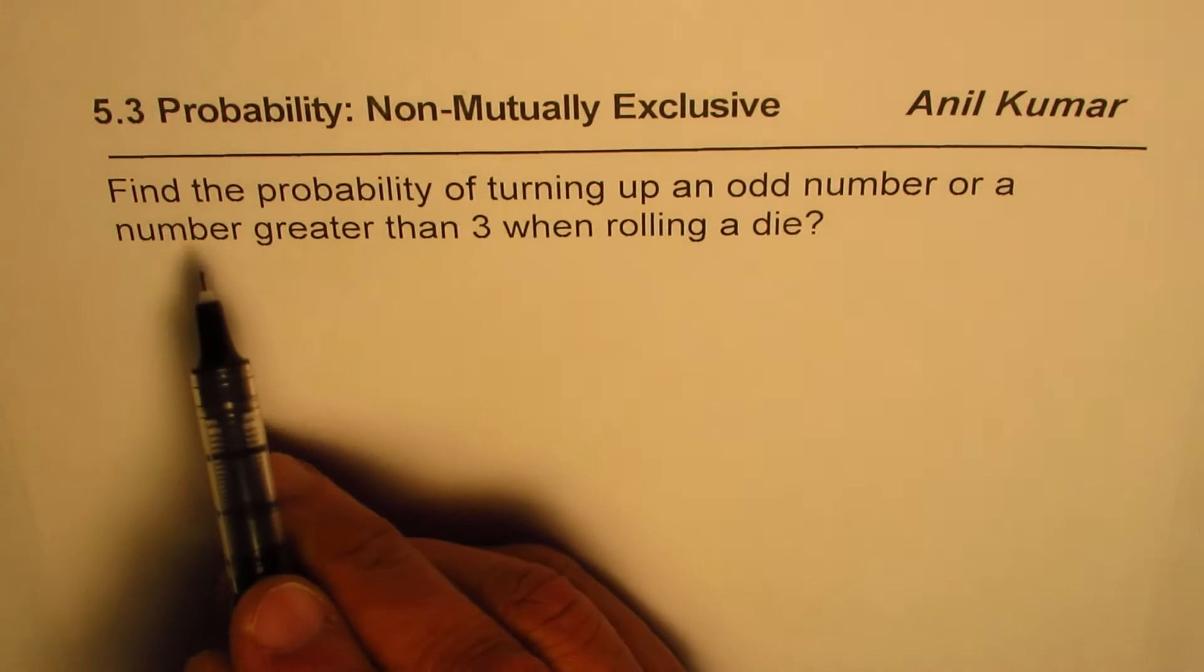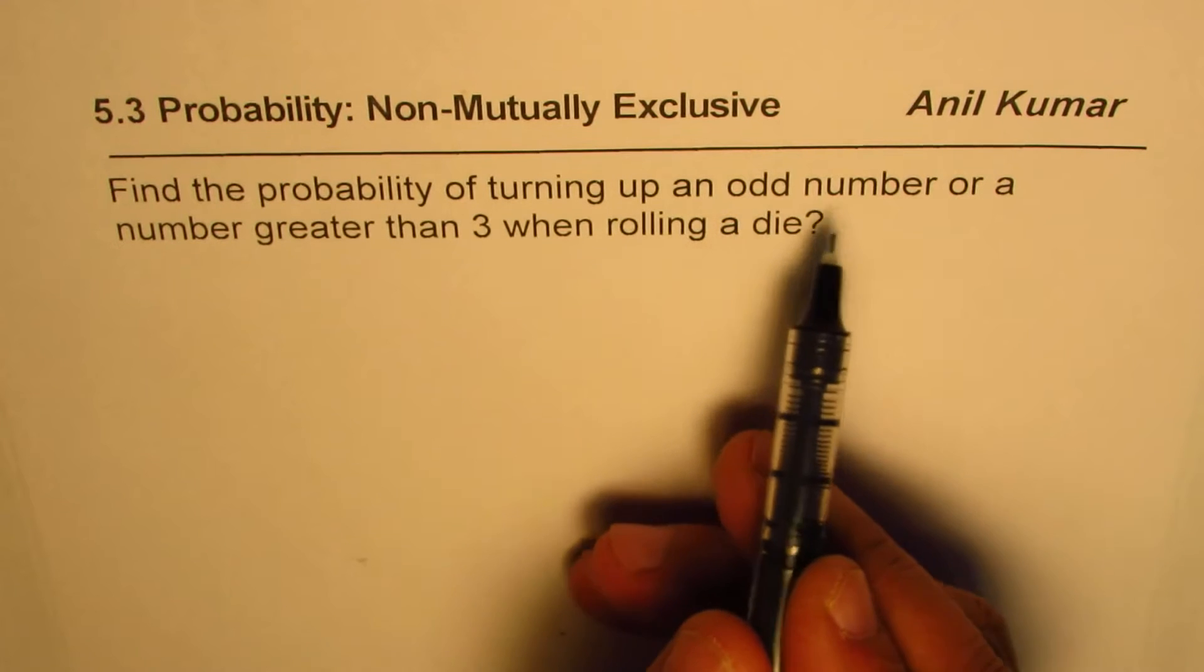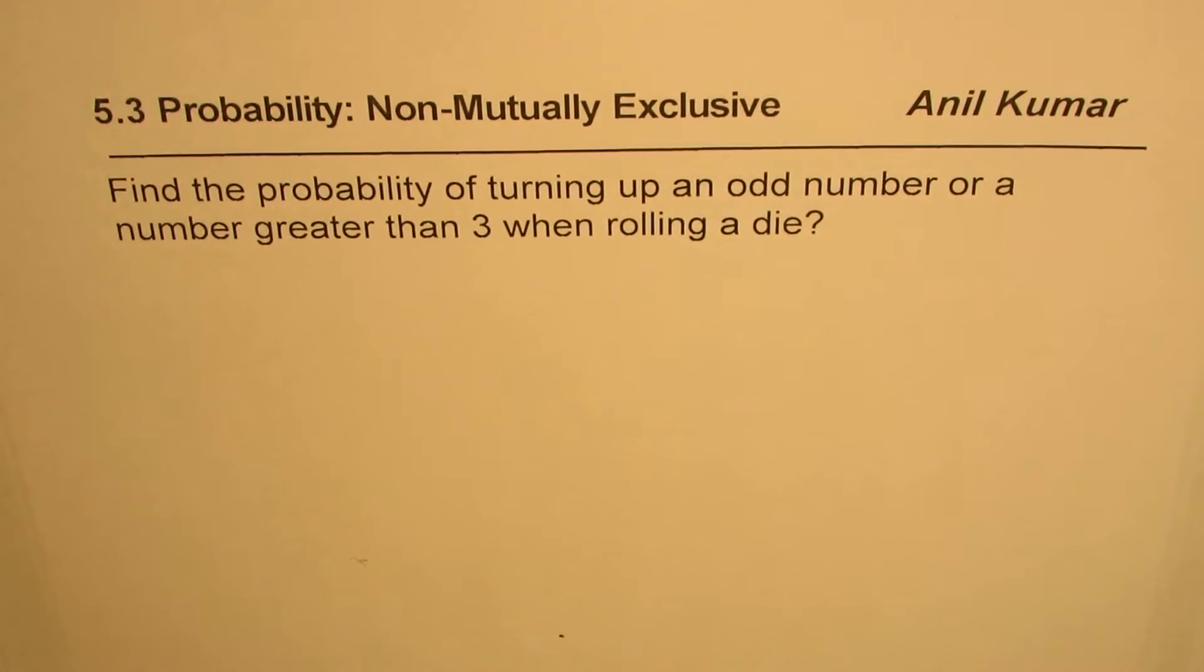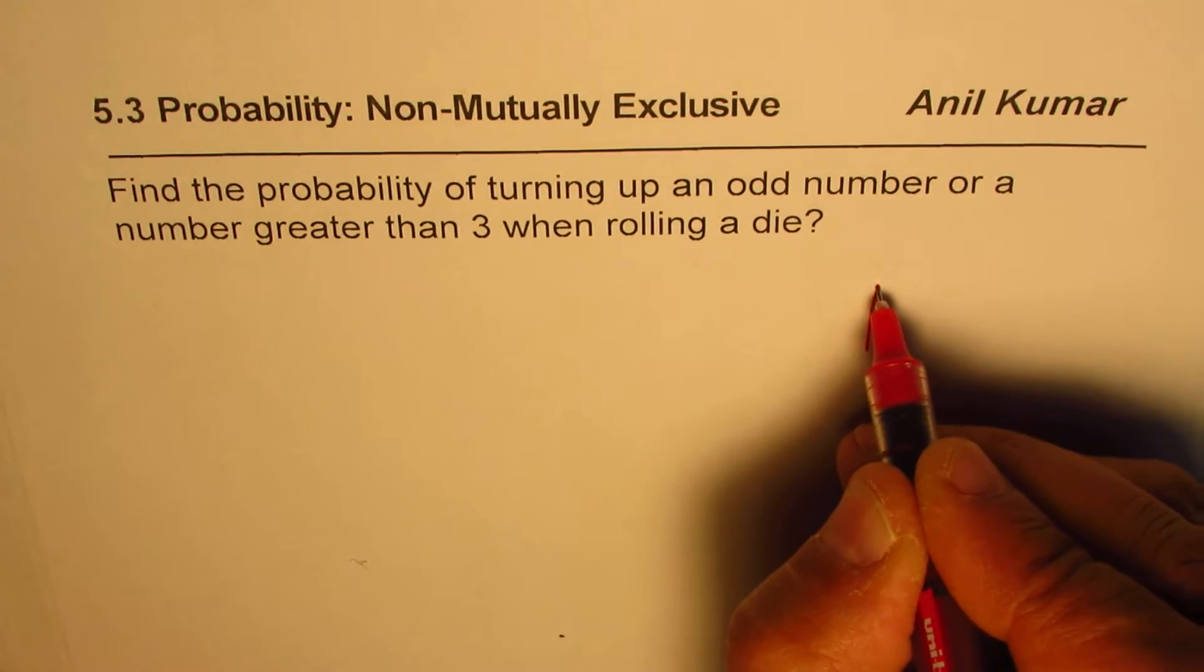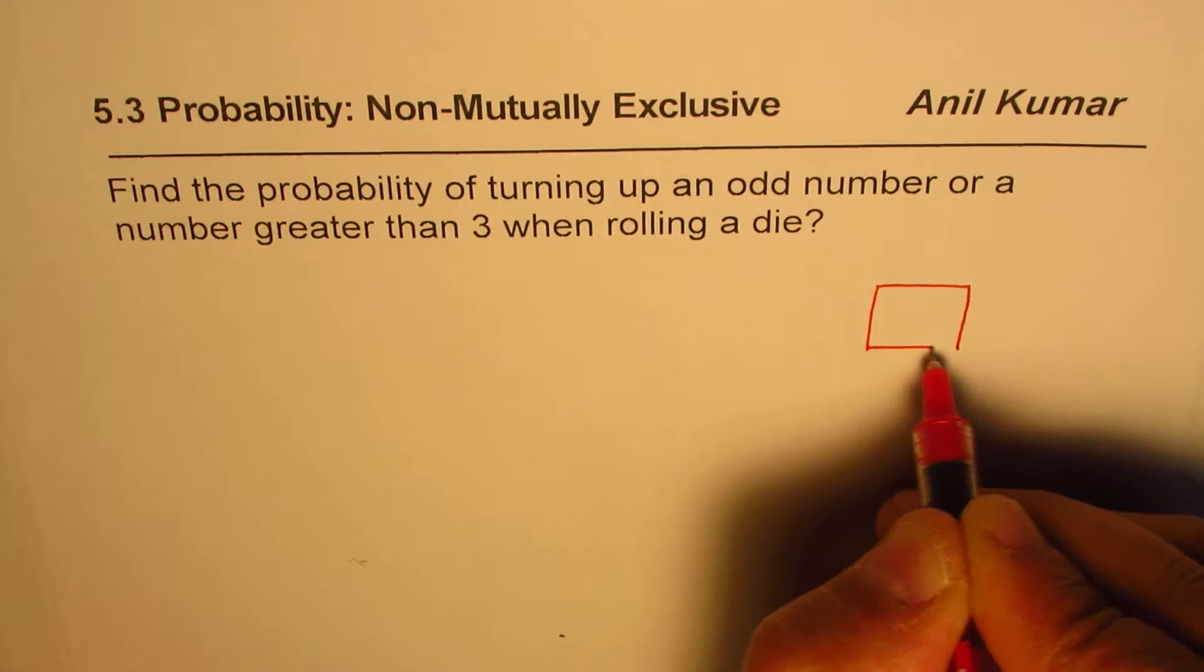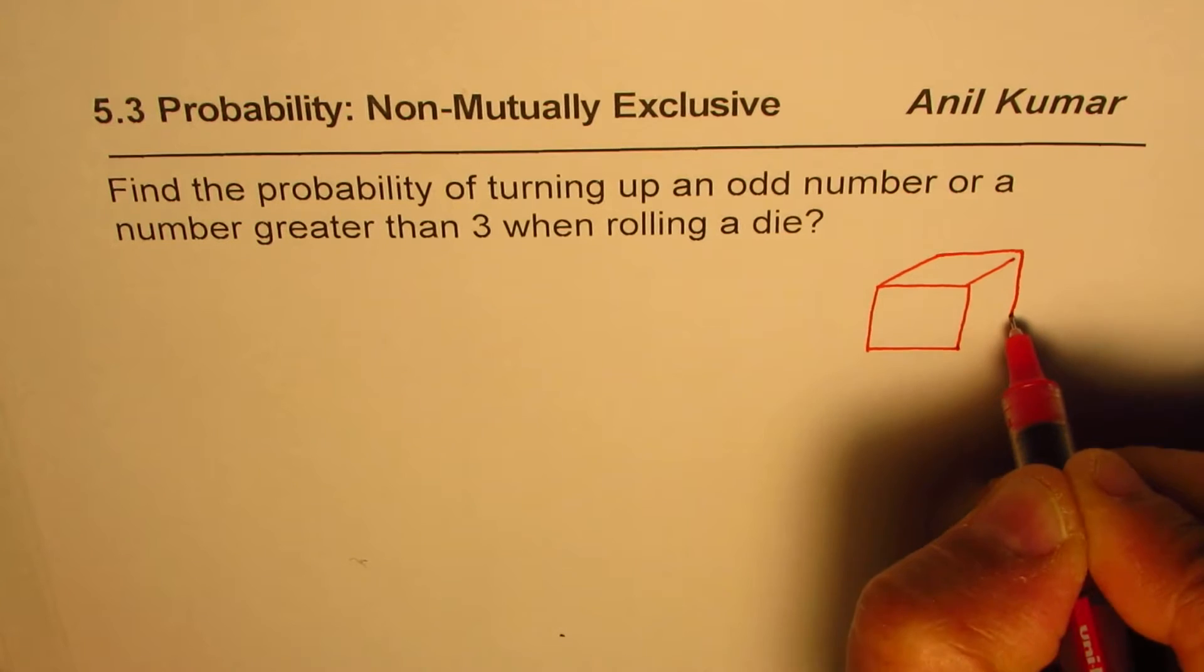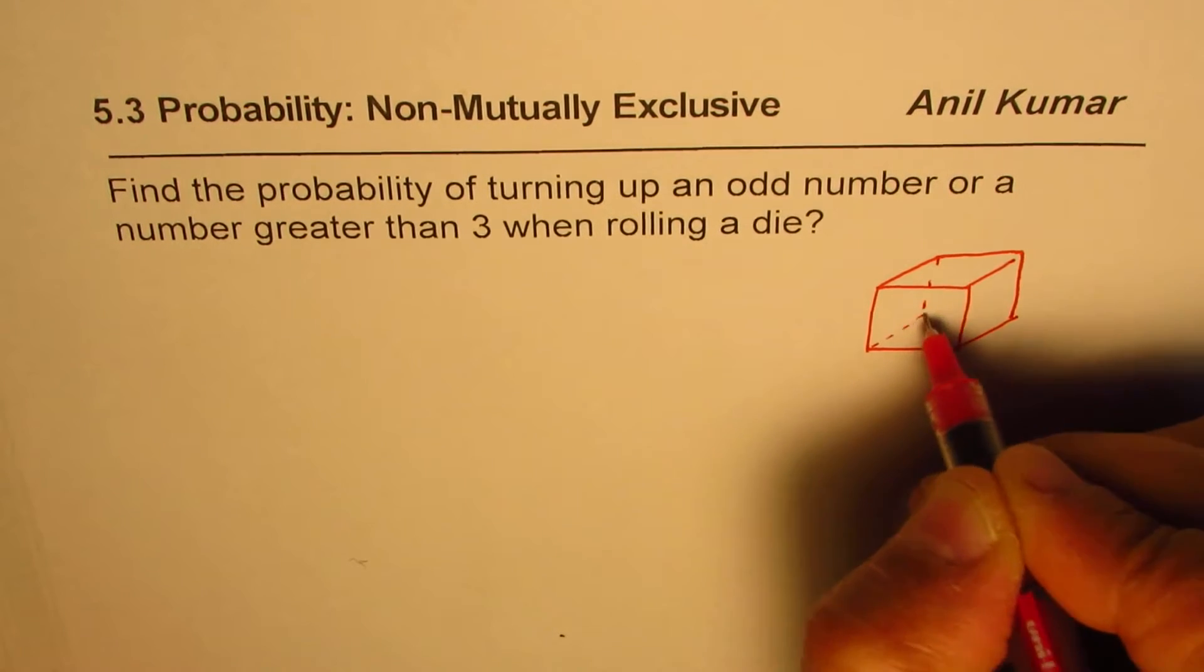The question here is find the probability of turning up an odd number or a number greater than 3 when rolling a die. So what we have here is a die, right? Now as you know it has 6 faces. So that's the kind of die we will be working with.